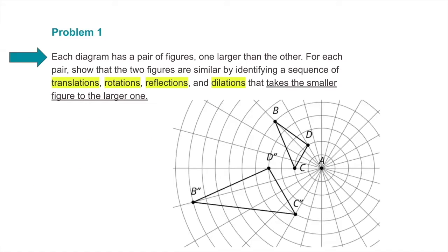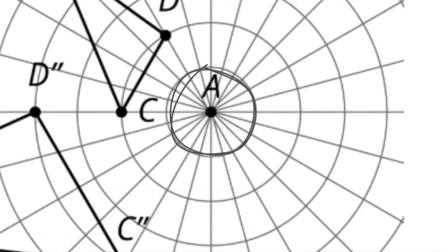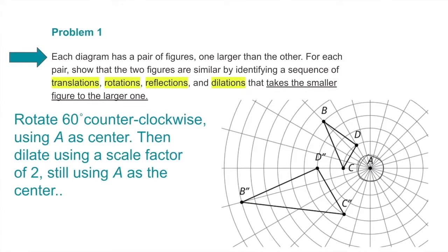For this diagram, we have triangle BCD and its corresponding triangle. Rotate 60 degrees counterclockwise using A as center. After rotating 60 degrees counterclockwise using A as center, then dilate using a scale factor of 2, still using A as the center. From point B to point D it's 3 units, and in the corresponding triangle the side length doubled from 3 units to 6 units — that's a scale factor of 2.